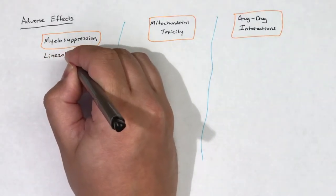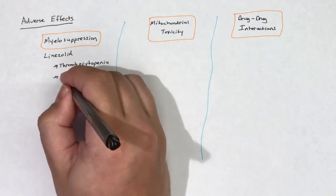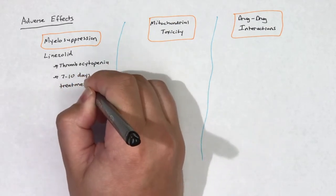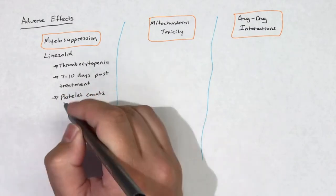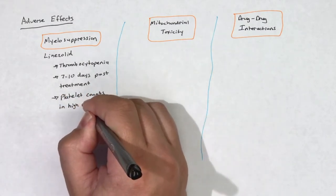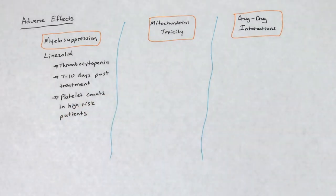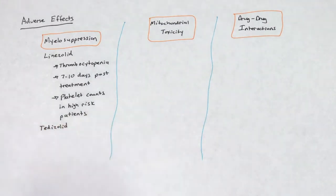Myelosuppression, and most commonly thrombocytopenia, has been reported in patients receiving linezolid with a typical onset of 7 to 10 days after treatment is initiated. This adverse effect is reversible after discontinuation of linezolid. Platelet counts should be considered for patients that have pre-existing thrombocytopenia or in patients that will undergo long-term treatment greater than two weeks with linezolid. Based on early clinical data with tedizolid, it seems that tedizolid may have less of a propensity to elicit thrombocytopenia when compared to linezolid.